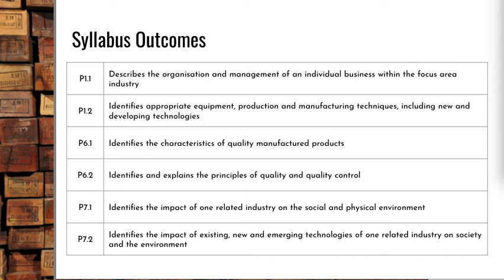There are a couple of different outcomes we're going to address across the lecture series. There are around about seven lectures for the different content areas we need to look at. Effectively, we need to look at the organisation and management structures of businesses, the tools, equipment, processes, and manufacturing techniques of different companies in our industry. We look at what makes quality products and how we control quality. We also look at the impacts to the social and physical environment of our industry, and there's an exploration into new and emerging technologies and how they impact on both society and the environment.